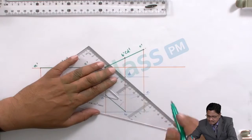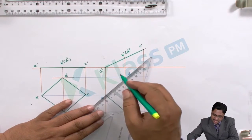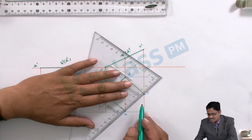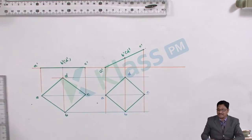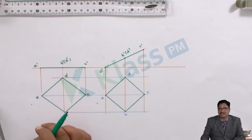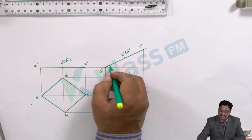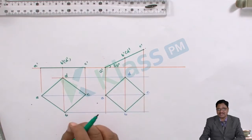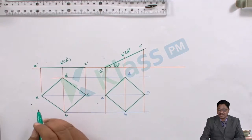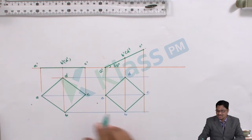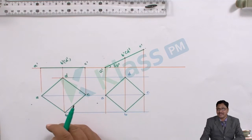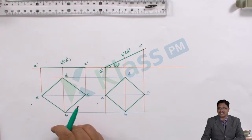Now, in this second-stage position, diagonal AC is making 30 degrees with HP as required. However, the other diagonal BD is currently perpendicular to VP. As per the problem condition, BD needs to make 45 degrees inclination with VP. So another transformation is required — we need to transfer to a new reference location.